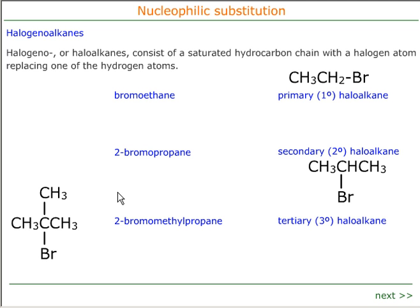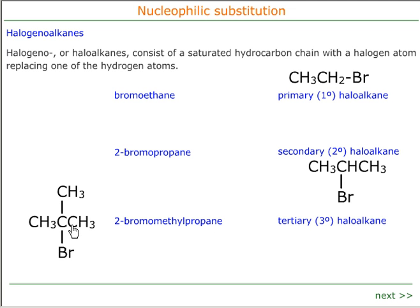In the third case, the tertiary halogeno alkane, there are three alkyl groups attached to the carbon that holds the halogen. So 2-bromomethylpropane is a tertiary halogeno alkane.